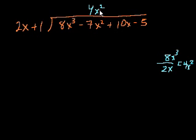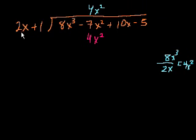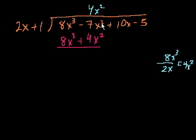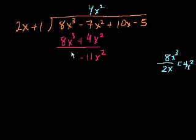We said that 2x goes into 8x to the third 4x squared times. Now we multiply 4x squared times 2x plus 1. So 4x squared times 1 is 4x squared — we write that in the x squared place. And 4x squared times 2x is 8x to the third. Just like traditional long division, we subtract: minus 7x squared minus 4x squared is minus 11x squared. And 8x to the third minus 8x to the third is 0, so we can ignore that.